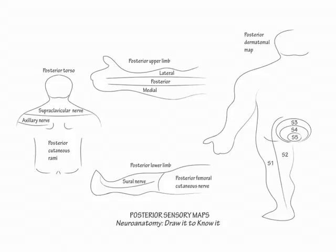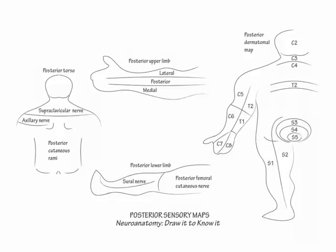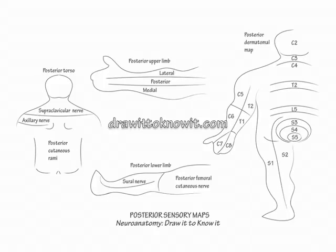Now show that the dermatomal sensory coverage of the posterior arms is the same as that of the anterior arms. Show C2 covers the back of the head, C3 and C4 the posterior neck, and T2 to L5 the upper back down to the buttock. This concludes our drawing of the sensory maps of the body.